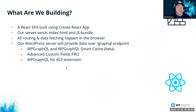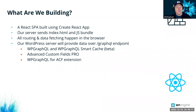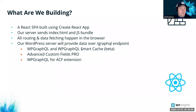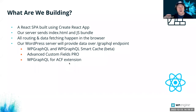What are we building today? In our workshop, we're going to look at a React SPA built using Create React App. The server is going to send an index.html file and a JavaScript bundle, and all of the routing and data fetching will happen inside of the browser. On the WordPress end, the server will provide data over a GraphQL endpoint. WP GraphQL and WP GraphQL Smart Cache are two plugins I have installed to make that happen.